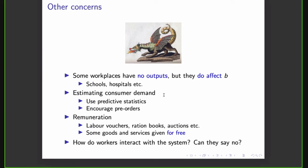We also have the question of remuneration, which is how people get paid and what means of payment do we have, what to demand payment for, and so on. And here there are a lot of ideas. We could have labor vouchers, we could have ration books, we could have an auctioning system, and so on. We could also give some goods and services for free, like healthcare, for example. And finally, how do workers interact with the system? Can they say no? And this is why we say that democracy is very important. People need to be able to get their hands on the system. And when they can do this, we expect the data quality to become better.